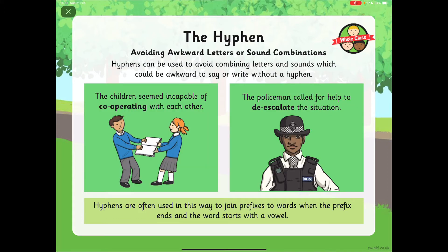Sometimes hyphens are used to avoid awkward letters or sound combinations, because they can be quite funny to say without a hyphen. For example: the children seemed incapable of co-operating with each other; the policeman called for help to de-escalate the situation. Hyphens are often used in this way to join prefixes to words when the prefix ends and the word starts with a vowel — on escalate and operating you've got vowels, the O and the E. So co- and de- make the word sound better.